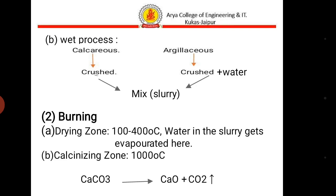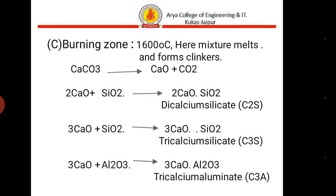In the calcining zone, organic matter burns and calcium carbonate decomposes into calcium oxide and carbon dioxide. In the burning zone, the mixture melts by chemical interaction at a temperature of 1600 degrees centigrade and forms clinker.